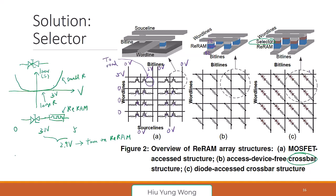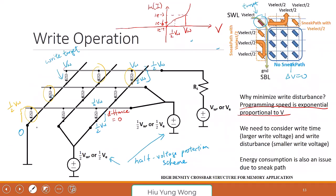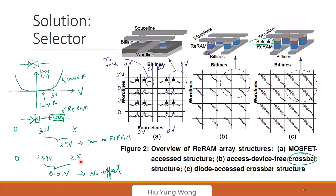But what if I use the half-voltage scheme — 2.5 volts? Then the selector gets about 2.49 volts because it is so resistive in that region. The voltage across the resistive memory is only about 0.1 volt — no effect. The point is that by adding this selective element, I apply V/2 but because the selector is so resistive, the resistive memory only gets about 10 millivolts — basically no voltage across it. So you solve the disturbance problem.